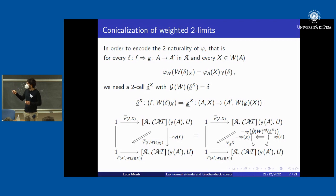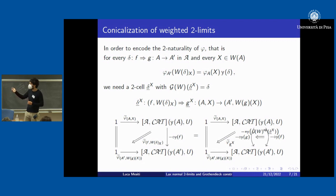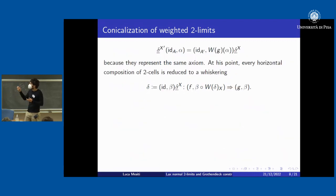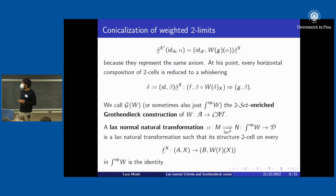To encode the two-naturality of phi, for every two-cell delta and every x we have an equality requiring a two-cell delta-to-x landing into g-to-x. The projected two-cell should be the identity on the right square, and project down to delta on the rightmost unit two-cell. An analogous swapping property ensures every horizontal composition reduces to whiskering identity with beta-delta-to-x. So we take these as two-cells — it's just a property for a two-cell delta to elevate to one landing into g-beta.